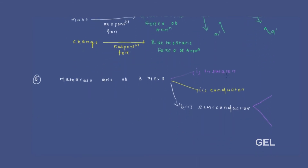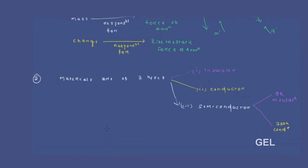Materials are of three types: insulator, conductor, and semiconductor. Semiconductor has a very interesting property because at 0K it behaves like an insulator, and at 300K it behaves like a conductor. So by the help of semiconductor, we can control the conducting nature.